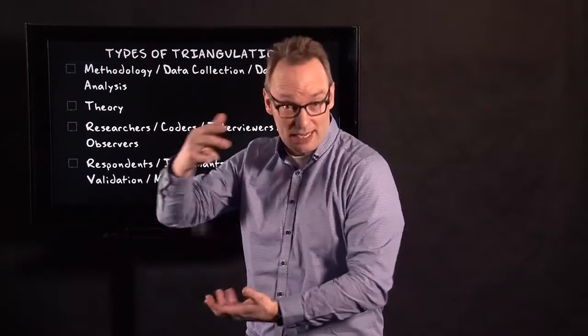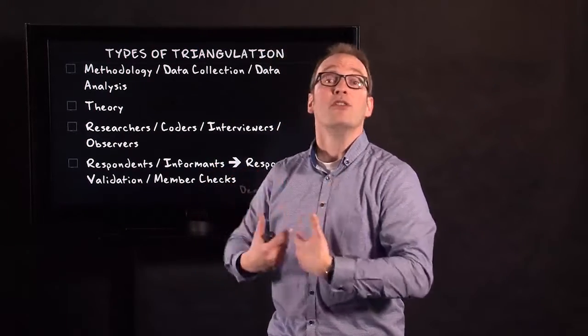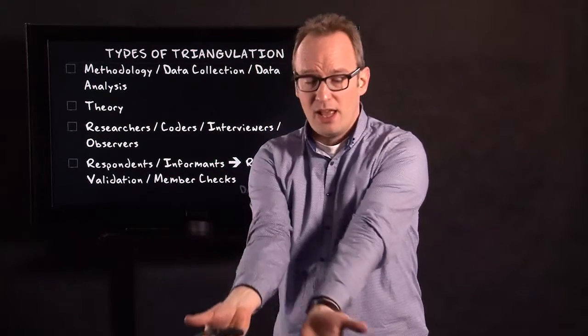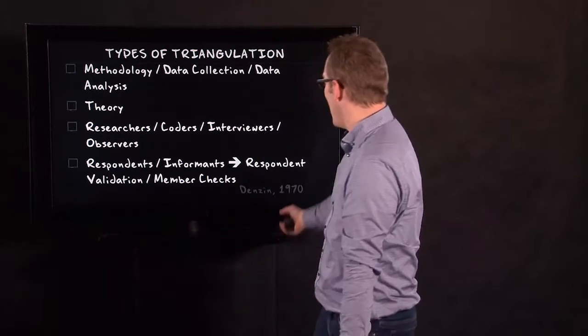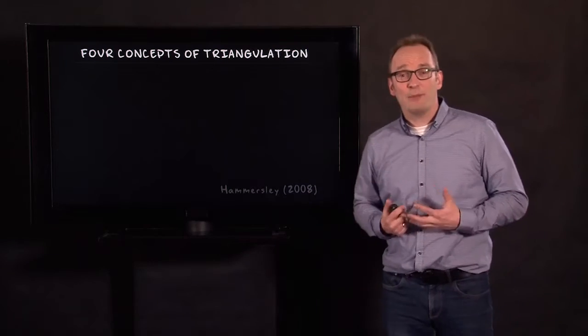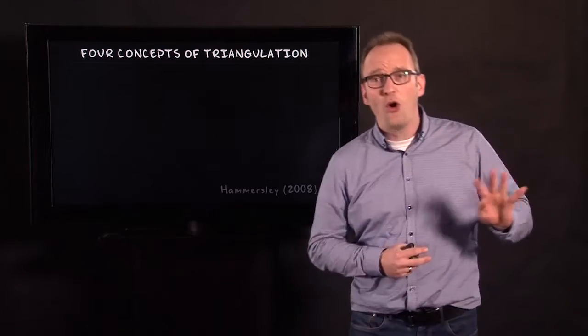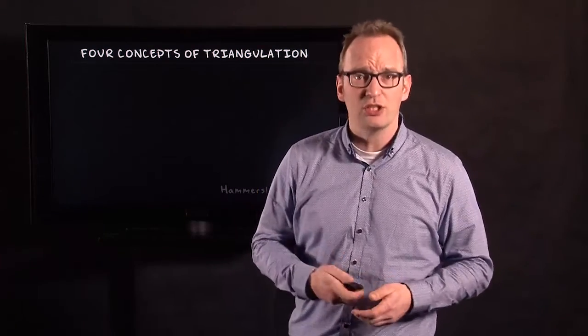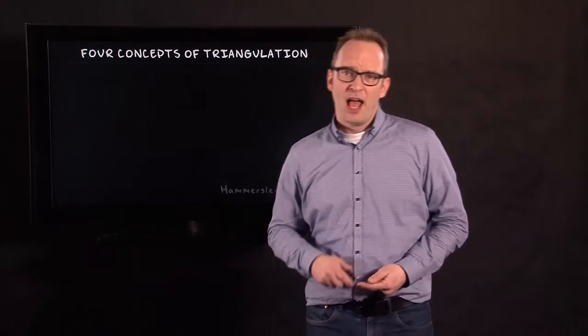The second way of triangulation is by going to an informant, get our information and then return with that information and ask someone to check it as some sort of member check.